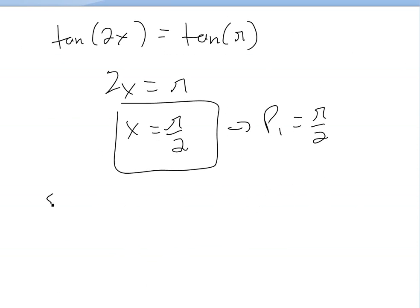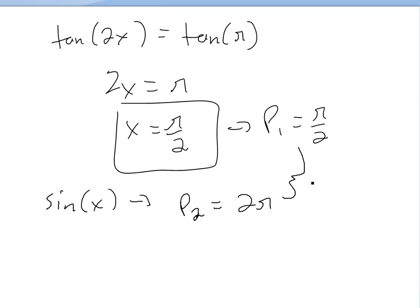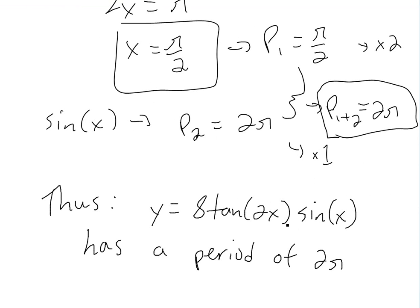For the other function, sin(x) has period P2 equals 2π. Now the combined period must be a multiple of both π/2 and 2π. Multiply π/2 by 4 to get 2π, and 2π times 1 is 2π. So 2π is an integer multiple of both periods. Thus the function 3tan(2x)·sin(x) has a period of 2π.